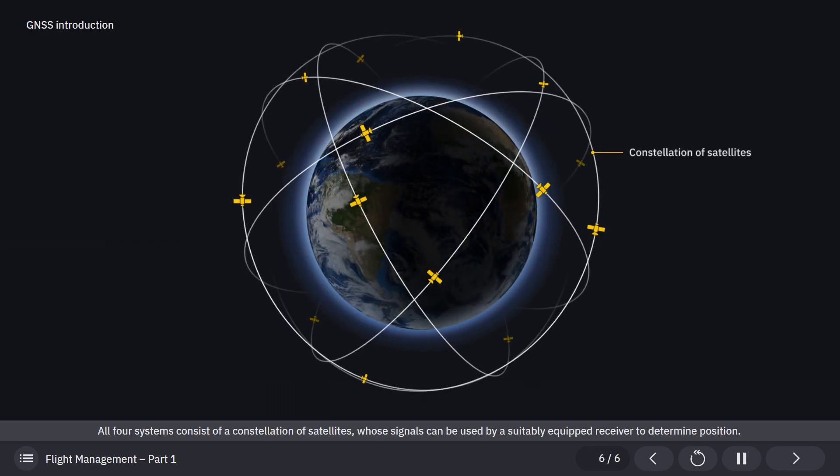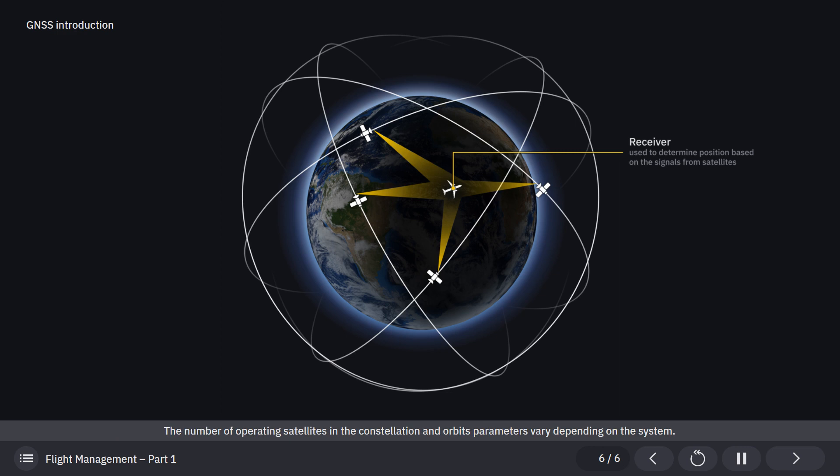All four systems consist of a constellation of satellites whose signals can be used by a suitably equipped receiver to determine position. The number of operating satellites in the constellation and orbit parameters vary depending on the system. As the operating principles of these systems are similar, they will be described using the still most popular Navstar GPS as an example. The differences between the systems will be discussed later.